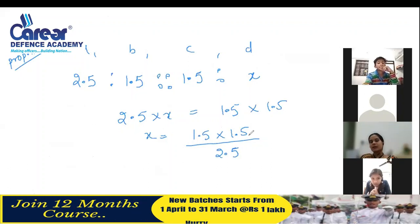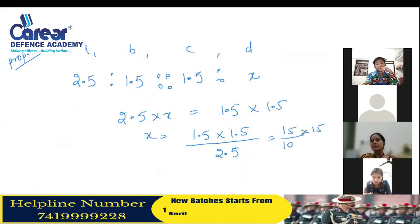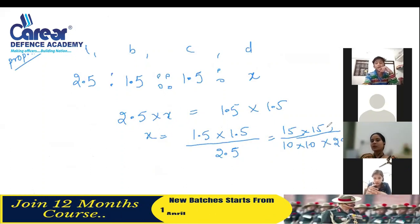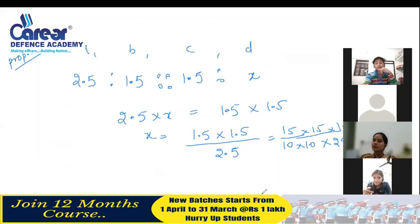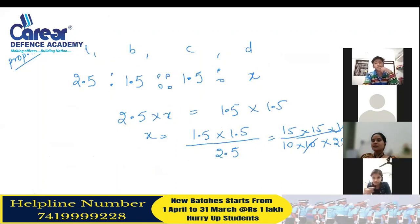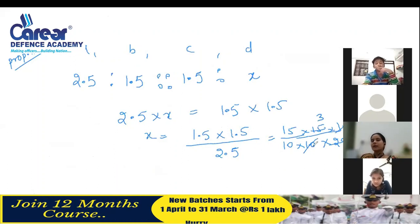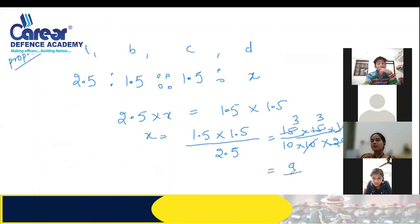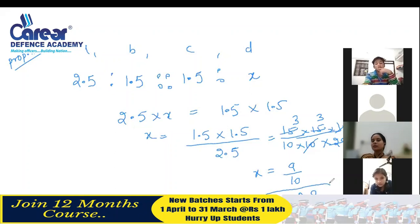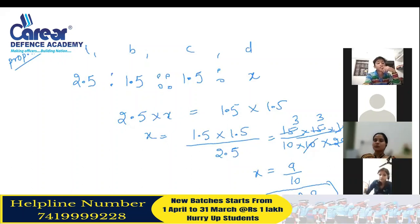Look at what we did: we convert 1.5 to 15 by 10 and 2.5 to 25 by 10. We can cancel the 10s. Then 5 fives are 25, 5 threes are 15, 5 ones are 5, 5 threes are 15. What we are left with is 9 by 10. So the value of x is 0.9.